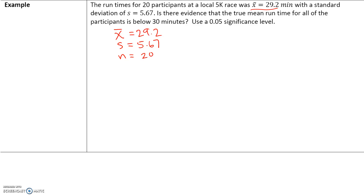We want to determine, based on this sample of 20 participants, is there evidence that the true mean runtime for all — keyword here is all — of the participants is below 30 minutes. Use a 0.05 significance level.